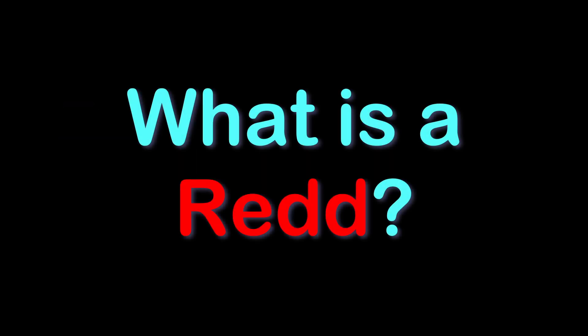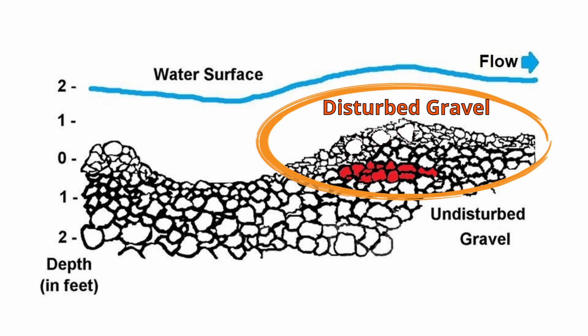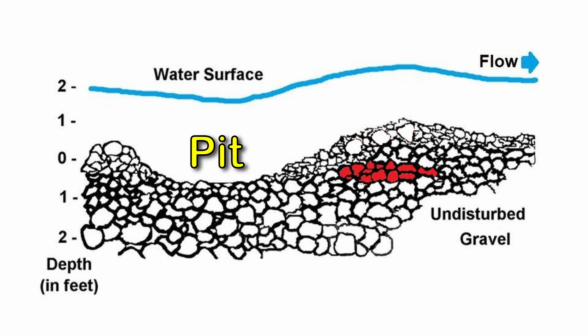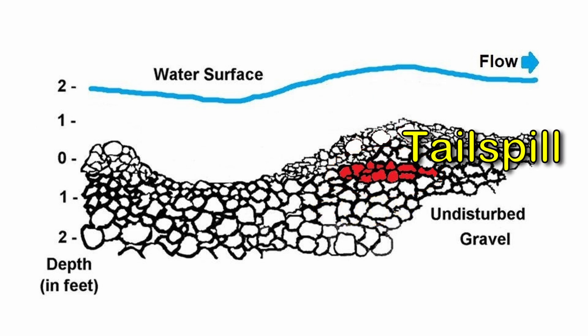What is a red? A red is a gravel nest made by a female salmon to protect and incubate their fertilized eggs. The basic components of a red are the pit, the eggs, the pillow, and the tailspill.